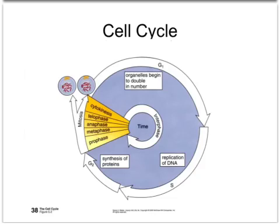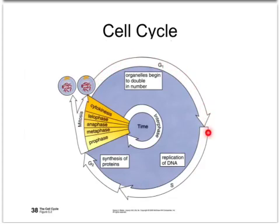An important thing to note in the cell cycle is that there are checkpoints. These checkpoints ask: have you done what you're supposed to do after your first growth phase — that G stands for growth — have you grown enough to enter into the synthesis phase, the DNA replication phase? Cancer ignores these checkpoints and keeps going without having done the necessary work to divide, which means we get divisions of cancerous cells that do not have the mechanisms to function as the cell they should have been.